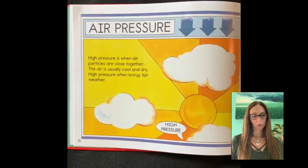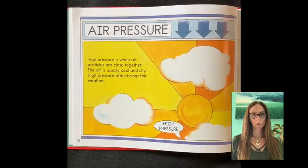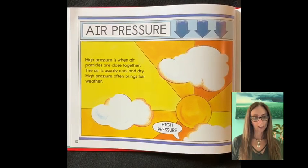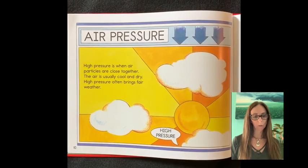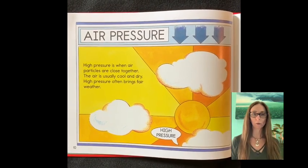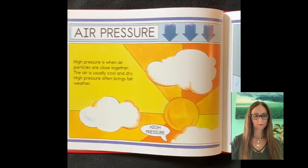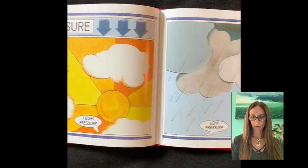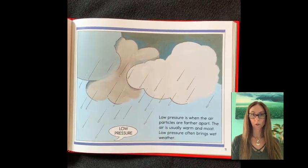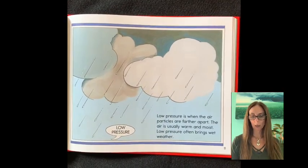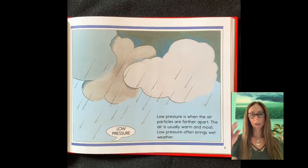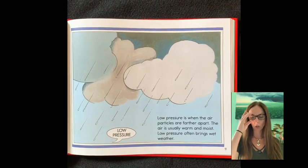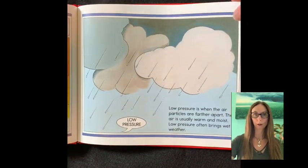Air pressure. High pressure is when the air particles are close together. The air is usually cool and dry. High pressure often brings fair weather. Low pressure is when the air particles are farther apart. The air is usually warm and moist. Low pressure often brings wet weather.